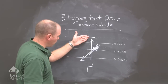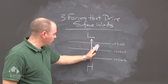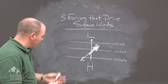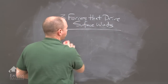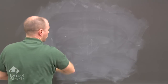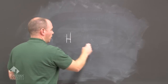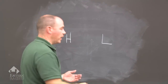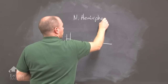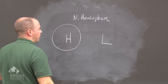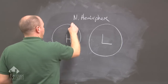We have pressure gradient force, Coriolis, and friction — the resultant wind crosses isobars at 45-degree angles. Now let's look at wind directions around two pressure cells. We have a high pressure here and a low pressure here, and we are in the Northern Hemisphere. We'll put one isobar around the high pressure cell and one around the low pressure cell, and then place stations.